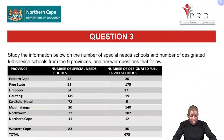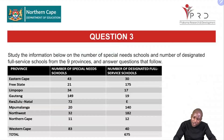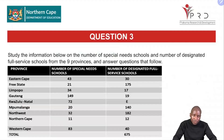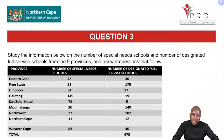Question 3: Study the information below on the number of special needs schools and designated full-service schools from the nine provinces and answer the questions. The nine provinces are Eastern Cape, Free State, Limpopo, KwaZulu-Natal, Mpumalanga, North West, Northern Cape, and Western Cape. For each province, we have two categories: number of special needs schools and number of designated full-service schools.